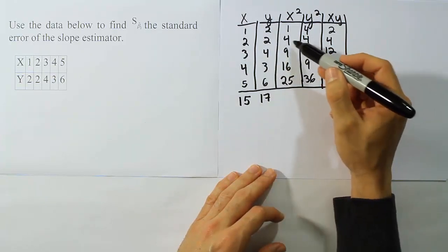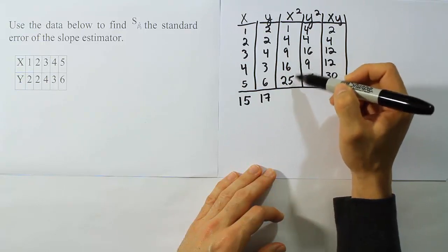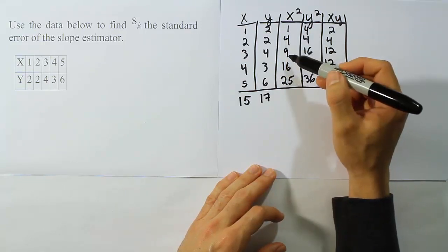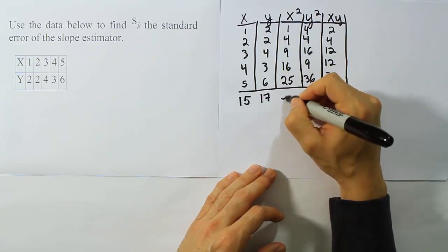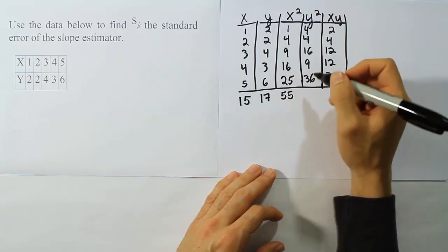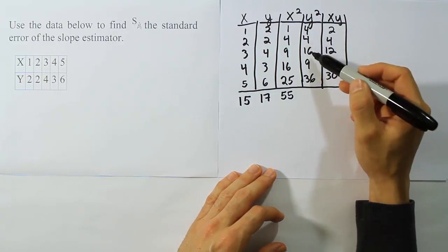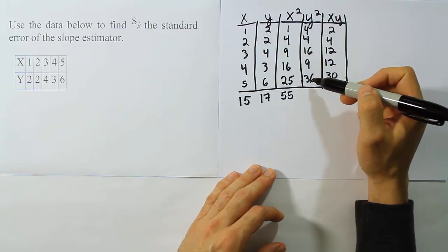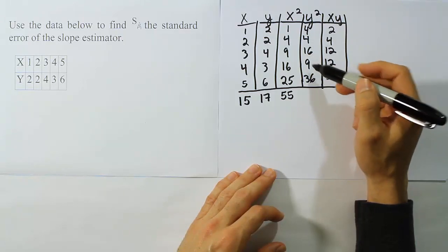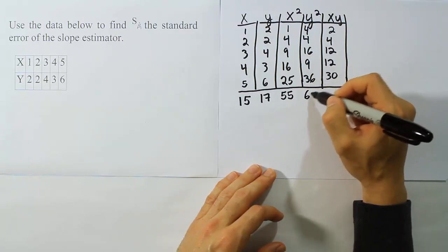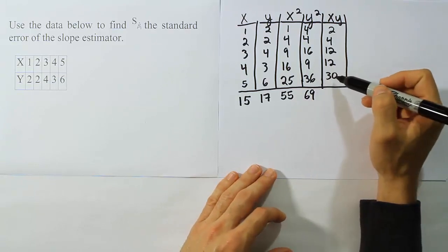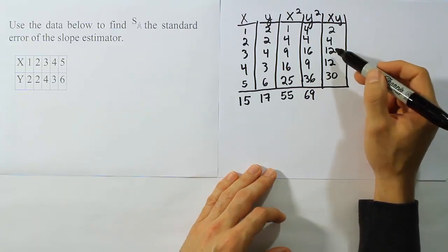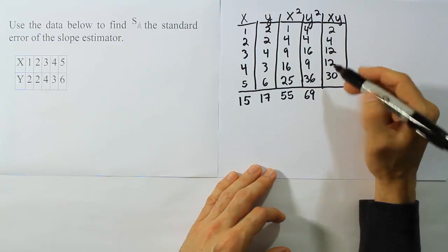And then here we have 20, that's 45, 46, 46, and 9 is 55 there. And then from there we have 20, and then another 24. 24 and 36 makes 60, and then 69. And then lastly we'll have 30 and 24 is 54, 54 and 6 is 60.